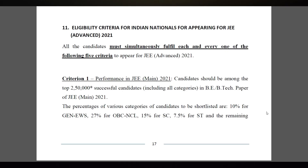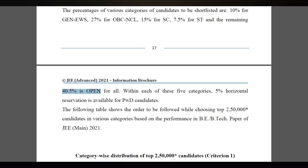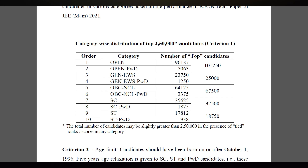Here is the main change: the eligibility criteria for Indian nationals appearing in JEE Advanced. First, performance in JEE Main 2021 — those who get into the top 2,50,000 successful candidates including all categories in BE/BTech paper of JEE Main will be eligible. Category-wise percentages are: 10% General EWS, 27% OBC-NCL, 15% SC, 7.5% ST, and the remaining 40.5% is open for all. Within each category, 5% horizontal reservation is available for PWD. Previously this was around 2,10,000 to 2,30,000; now it is 2,50,000.